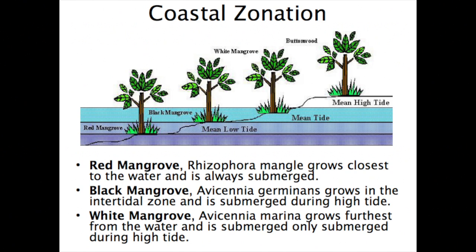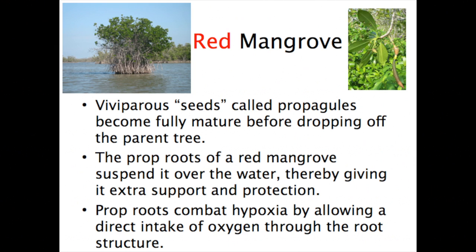They form coastal zonations: the red mangrove grows in the low tide zone, the black mangrove grows in the mean tide zone, and the white mangrove grows at the high tide zone. The red mangrove has viviparous seeds called propagules that become fully matured before dropping off the parent tree. They also have prop roots that extend out of the water, giving the plant extra support and protection, and these prop roots combat hypoxia by allowing a direct intake of oxygen through the root structure, like snorkels.